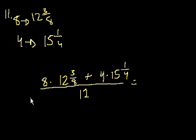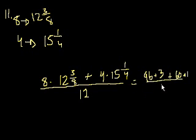So this is equal to, let's see. What's 8 times 12? 8 times 12 is 96. And what's 8 times 3/8? So it's 96 plus 3. You could view 12 and 3/8 as 12 plus 3/8. So I kind of did a distributive property there. You could turn this into an improper fraction if that's easier. And then plus, what's 4 times 15? It's 60, right? And then 4 times 1/4 is 1. All of that over 12.